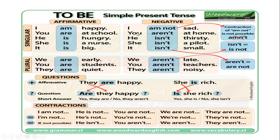For the negative, you can say: I am not sad. You aren't at home. He isn't thirsty. She isn't a pilot. It isn't small. Con I am not, no se puede hacer una contracción completa — solamente podemos contractar el pronombre con el verbo y decir I'm. Pero los demás sí: you aren't, he isn't, she isn't, it isn't. Para he, she, it utilizamos 'is'. We aren't late. You aren't teachers. They aren't noisy. Aren't is equal to are not.